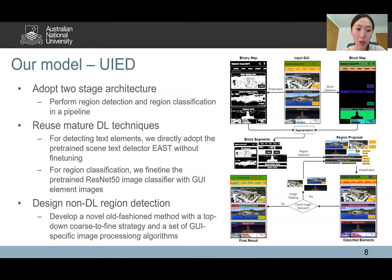Therefore, we propose our model URED, a synergy of deep learning and old-fashioned methods. We adopt a two-stage architecture, reusing state-of-the-art deep learning techniques to detect text and non-text elements and classify the regions. We also develop a novel old-fashioned method with a top-down coarse-to-fine strategy and a set of GUI-specific image processing algorithms. Please see more detail in our full video.